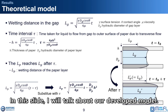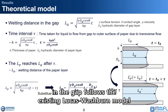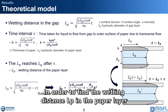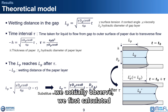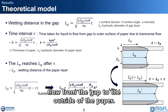In this slide, I will talk about our developed model. In this study, we assumed that the main flow occurring in the gap follows the existing Lucas-Washburn model. So, the wetting distance Lg is obtained by the Washburn equation. In order to find the wetting distance Lp in the paper layers we actually observed, we first calculated the time tau the liquid travels through the transverse flow from the gap to the outer surface of the paper.